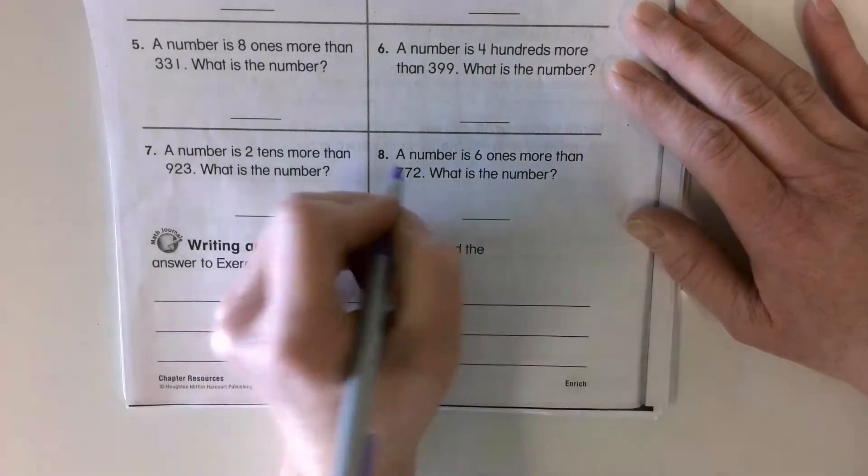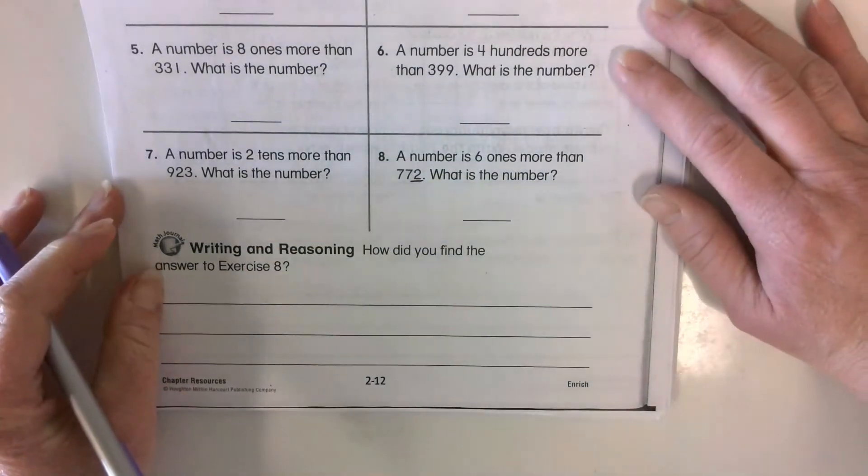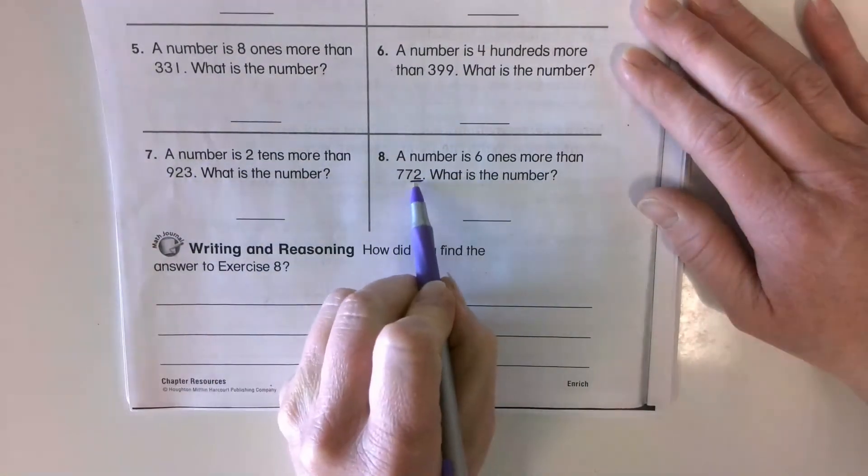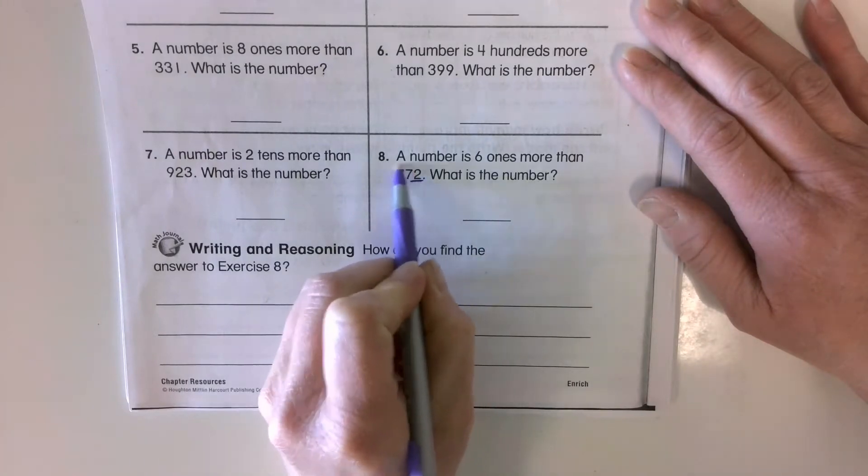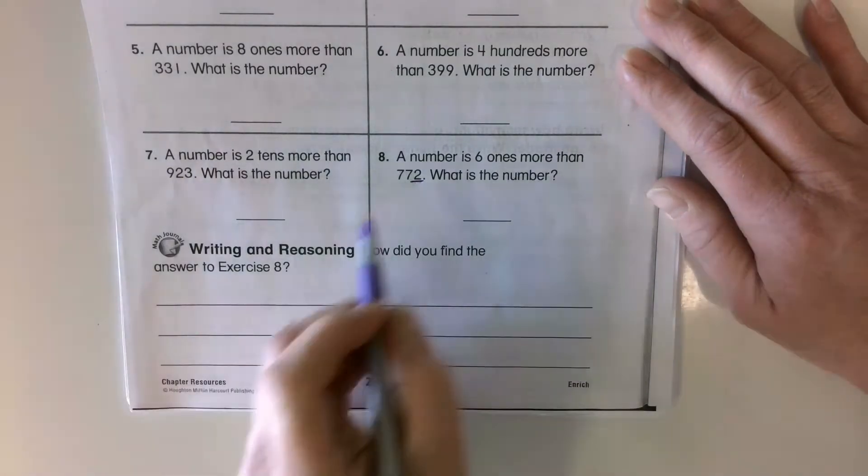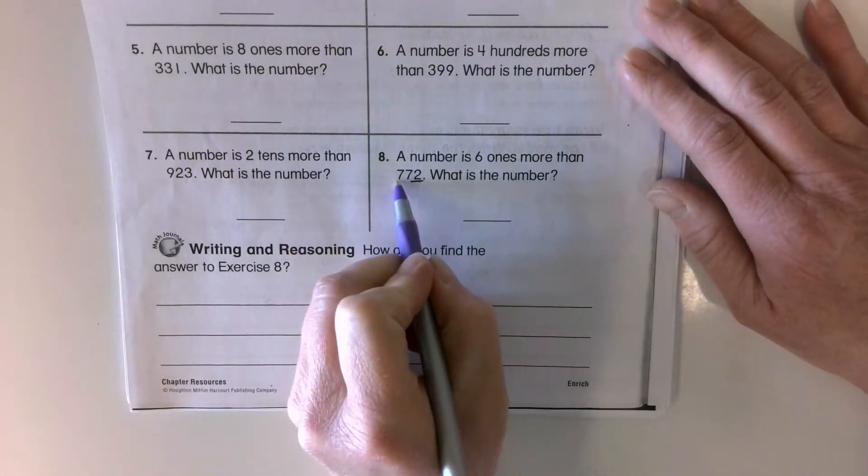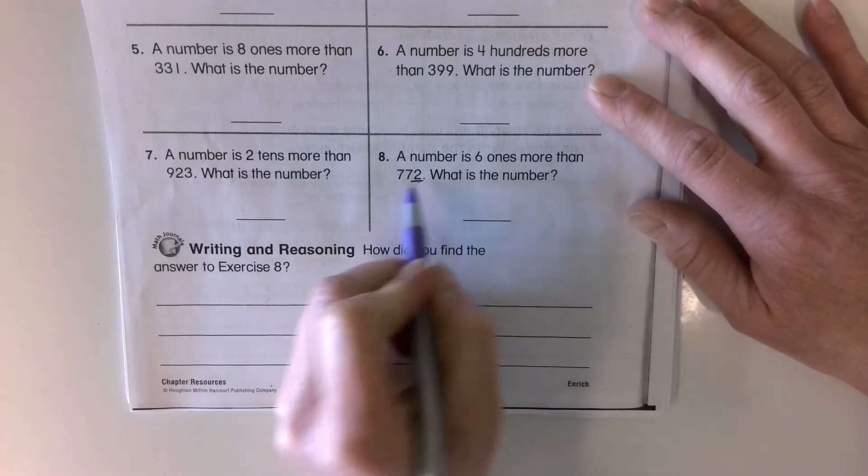I'm going to underline the ones spot because that's the spot we're looking at. And I'm going to add six to this number. The other two digits are going to stay the same. So that's going to say 778. Two plus six is eight.